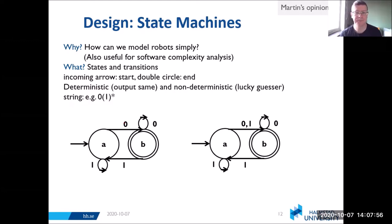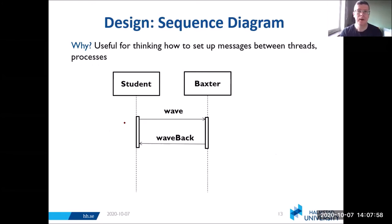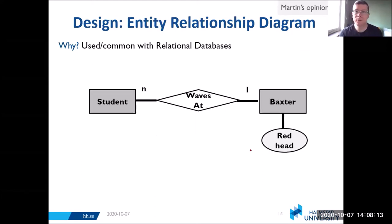Here is another example of a diagram that I use quite a bit when I'm making different processes that should communicate with one another. You can see again, if a student waves to Baxter, then Baxter will wave back. Entity relationship diagrams are useful if you're making a database. Here you have N students who wave at one Baxter who has a red head.